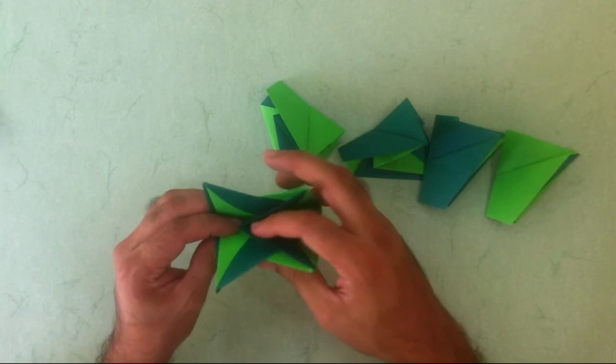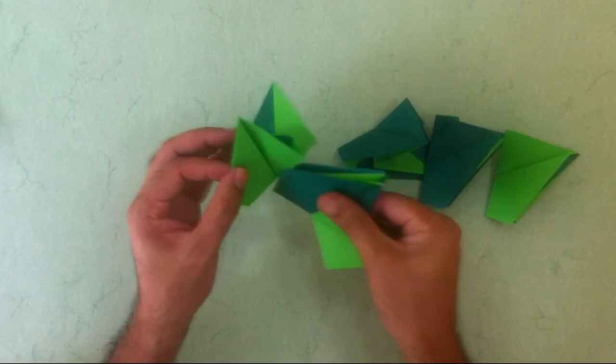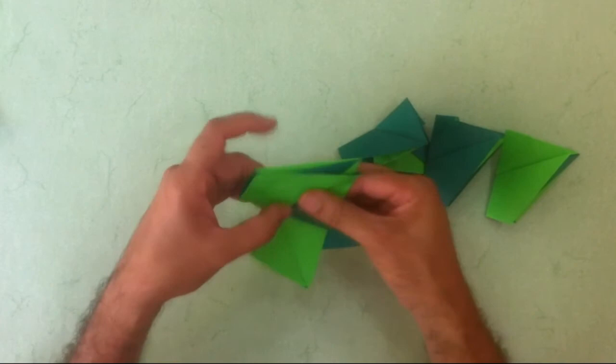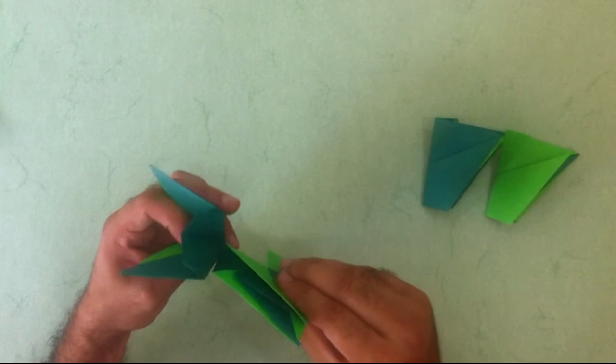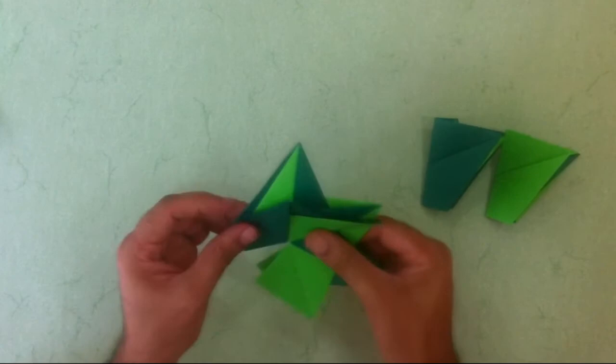Making sure it goes symmetrical here. And then I am using the next tab to go into the next unit's pocket. Again making sure it is in the center. Dark one now. Just open it up a little bit to have a little bit of space.